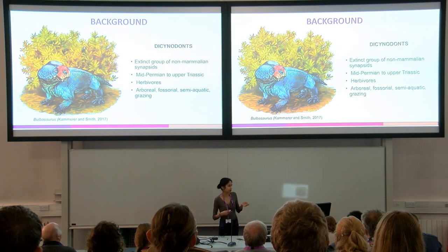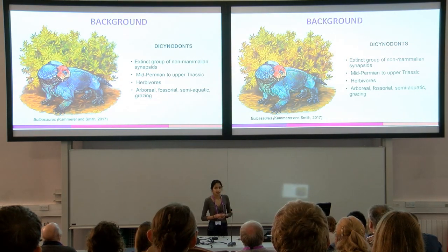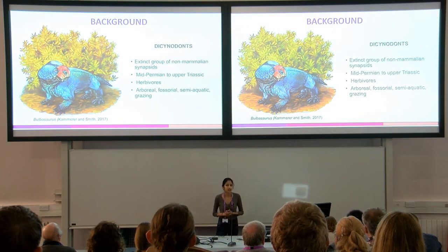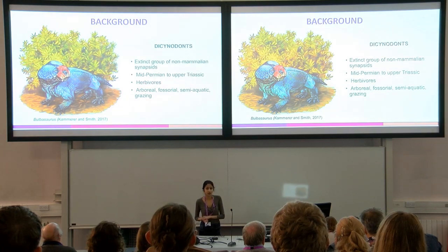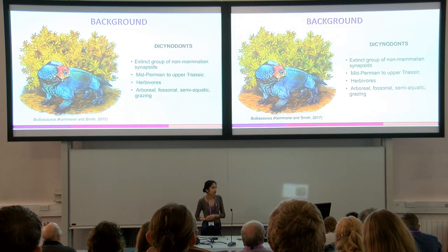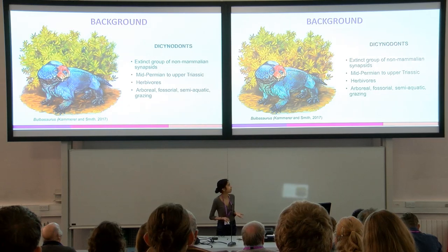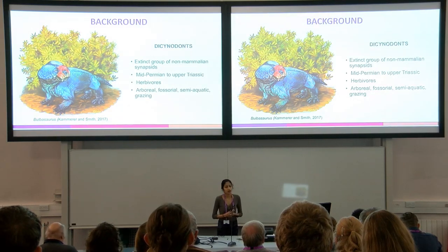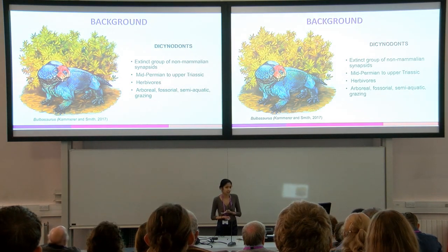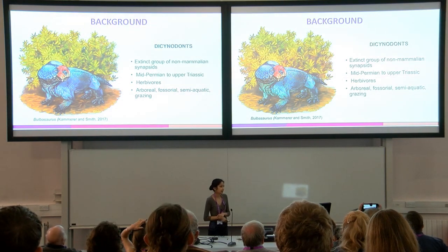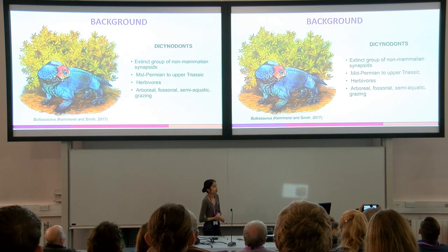Dicynodonts are an extinct clade of non-mammalian synapsids that ranged in age from the middle Permian to late Triassic periods. Dicynodonts were the dominant herbivorous tetrapods of their time, and they owed their success to the evolution of skull and masticatory morphology that aided in their herbivory. There are over a hundred species of dicynodonts known from mid-Permian to late Triassic deposits, and they occupy a wide variety of ecological niches.